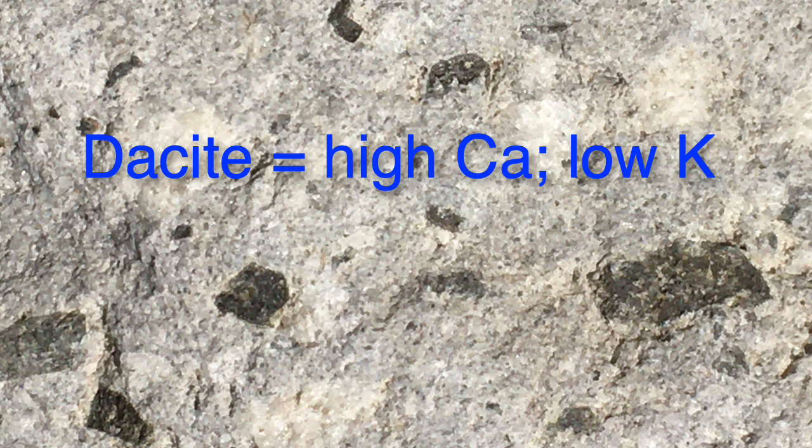The difference between dacitic compositions and rhyolitic compositions is that they're rich in calcium and poor in potassium, so you don't get white micas, which are potassium micas. Instead, the water goes into the